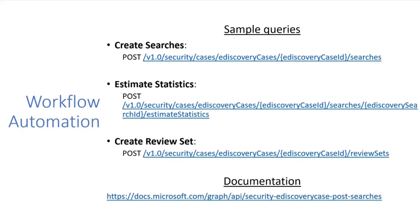Another example for workflow automation: if you're going to create searches, you can specify the content search, the keywords, and other parameters. You can look at statistics — how many mailboxes were held, their sizes, number of sources found, and more. Great ways to access and automate these processes and see what's available.